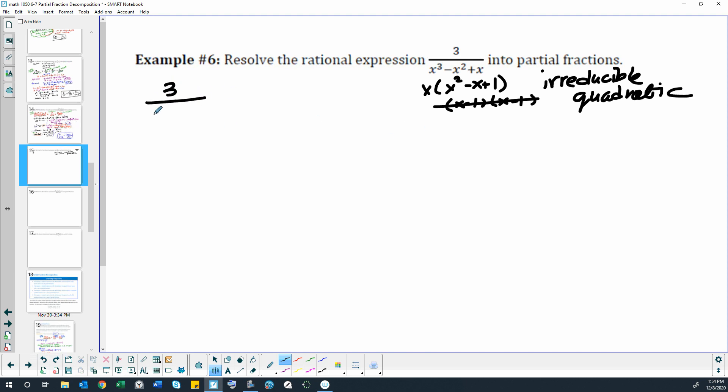So we have 3 over x times x squared minus x plus 1 equals a over x plus bx plus c over x squared minus x plus 1, because I have to have a linear on the top.